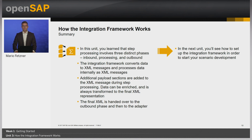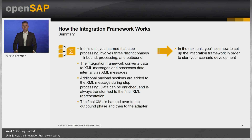To summarize this unit: step processing involves three phases — inbound, processing, and outbound. The integration framework converts all data it receives to XML messages and processes data internally as XML. Additional payload sections are added to the XML message during step processing. This can include external calls to enrich the data as well as the transformation of the data into a final XML representation. The final XML is handed over to the outbound phase and the adapter for transmission. In the next unit, you will see how to set up the integration framework as a development environment to start your scenario development.